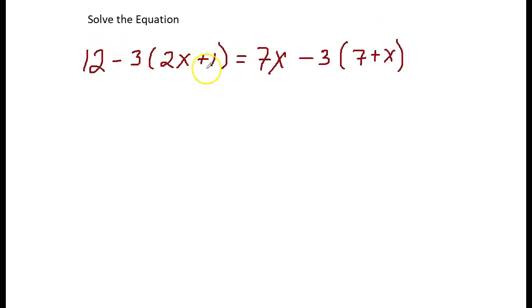I have parentheses, and since there is a number in front, I have to use my distributive property to distribute this negative 3. This 12 I'm just going to bring it down. I'm going to distribute the negative 3, that means I'm going to multiply negative 3 times 2x and then negative 3 times 1.